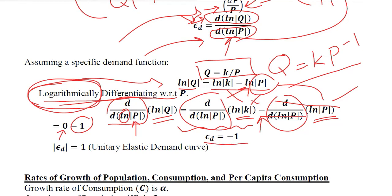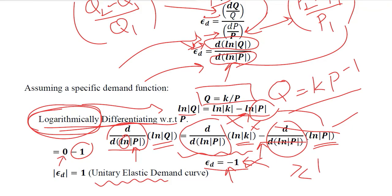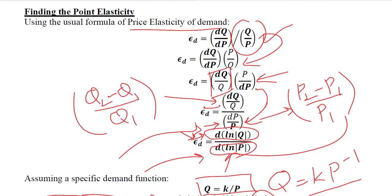The elasticity of demand equals minus 1. To interpret it, we understand the sign and magnitude. The negative sign means there is a negative relationship. The magnitude is 1, which implies we are dealing with a unitary elastic demand function. This is a rare case because usually it is greater than 1 or less than 1. However, in this case we have a unitary elastic demand function.